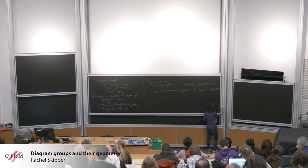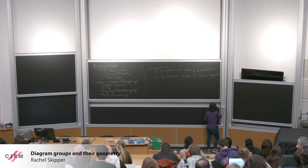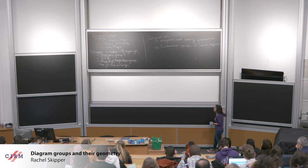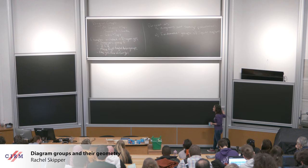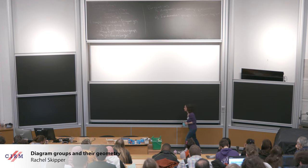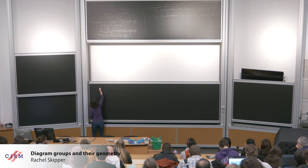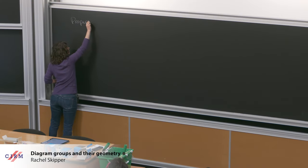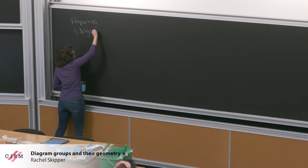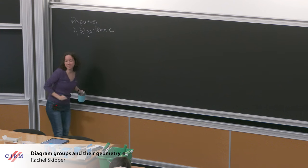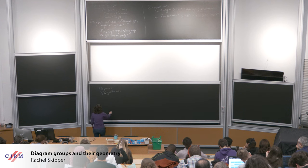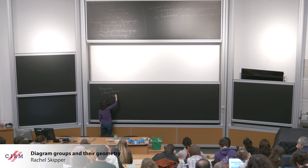In addition to including lots of groups that we care about, diagram groups have a lot of nice algorithmic properties, and these perspectives let you prove these things. In terms of algorithmic properties, these groups have solvable word problems.